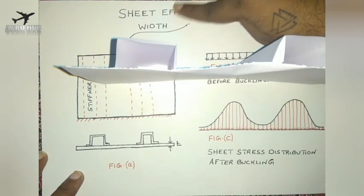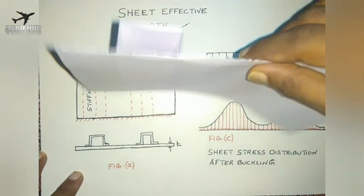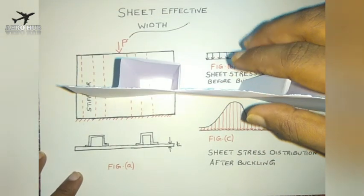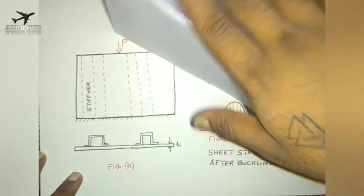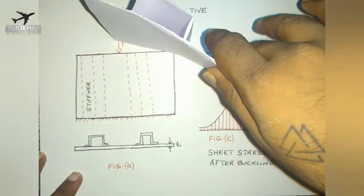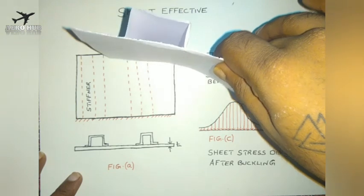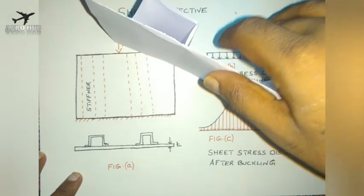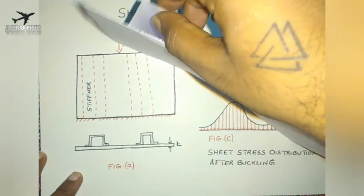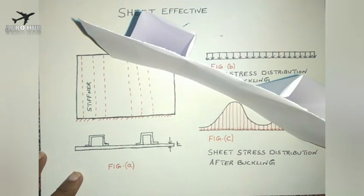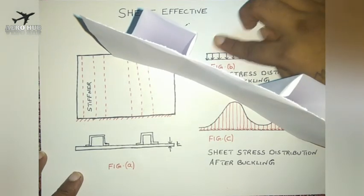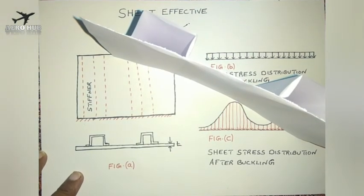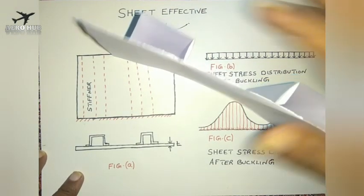The stiffener will carry a greater amount of stress when the plate buckles. Finally, when the ultimate strength of the stiffener is reached, the stiffener will fail, and the entire assembly will fail. We will study that behavior.